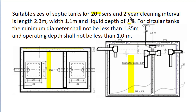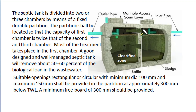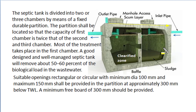For the same 20 users, if we need a circular tank, the minimum diameter of that tank shall not be less than 1.35 metres and operating liquid depth shall not be less than 1 metre. The construction of the septic tank can be illustrated by the diagram shown here with length, breadth and depth as indicated. The septic tank is divided into 2 or sometimes 3 chambers by means of a fixed durable partition.